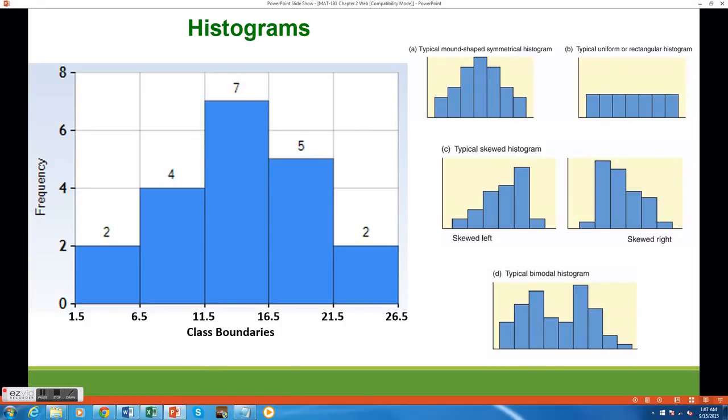Here we have a histogram for our data set, which we created using our five data ranges. Notice the bars are all the same width, since we did such a great job of keeping all our classes the same size.